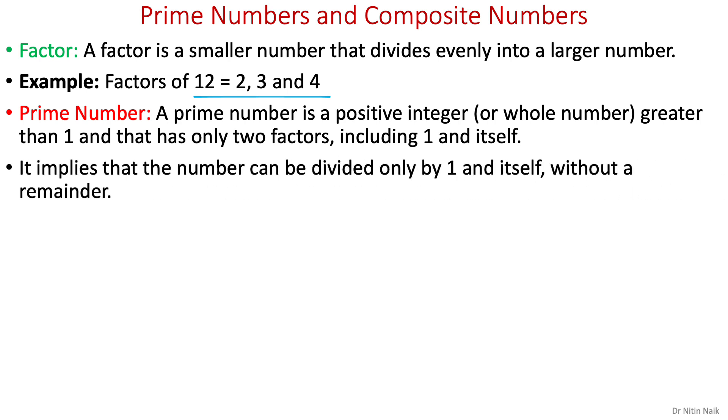That means the number can be divided only by 1 and itself without a remainder. Let's look at some examples: 2, 3, 5, 7, 11, 13, 17, 19, 23, 29, 31, 37, 41, 43, 47.